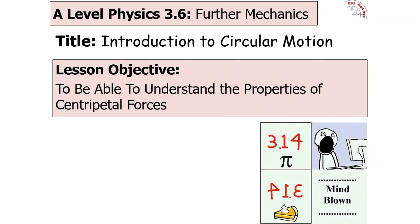Hello and welcome to today's lesson looking at circular motion. This particular part of the A-level course links into the third mechanics topic, which is found as topic 6 of the AQA A-level physics specification. It is found on paper 1 of the AQA A-level examinations but is not found on the AQA AS physics specification. In today's lesson we're going to try and understand the properties of centripetal forces and how they link into circular motion.